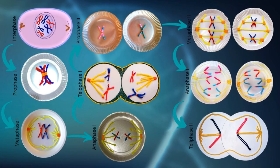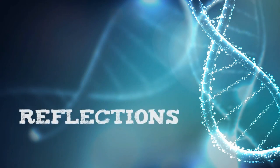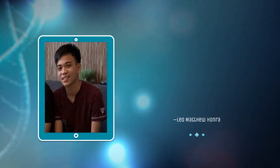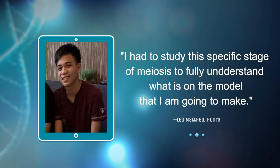Here is a diagram which is the result of our group's hard work. Before ending this presentation, here we have the compilation of our reflections on this activity. For this output, my leader assigned me Metaphase II of Meiosis II. I made a model using yarn and paper. At first, I had to study this specific stage of meiosis to fully understand what to include in the model I was going to make, then proceeded with building it.